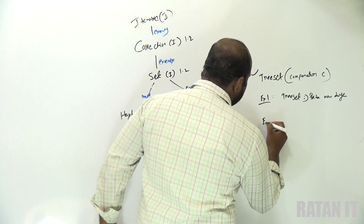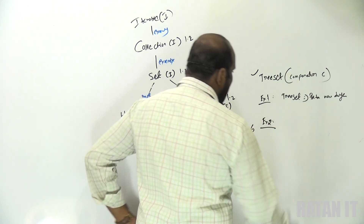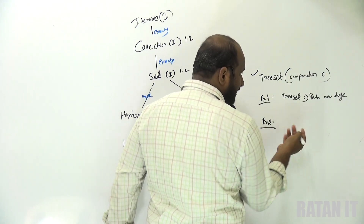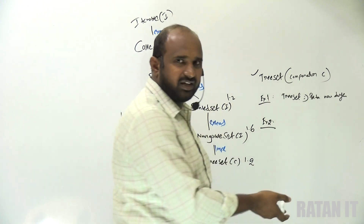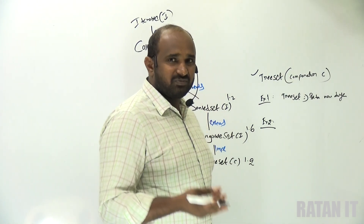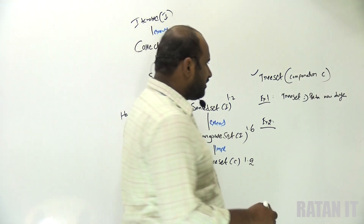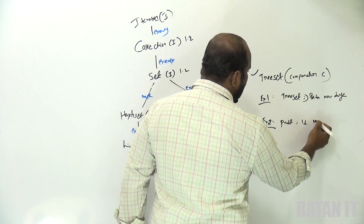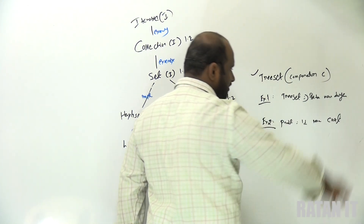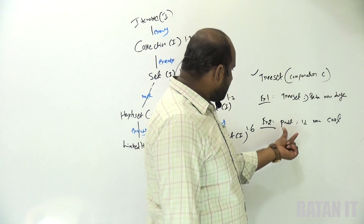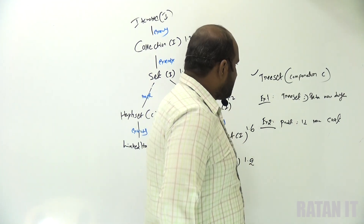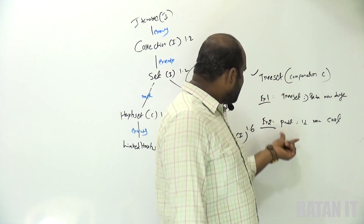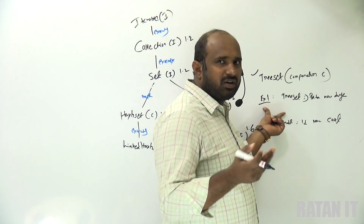In example two, I will take product data. The product object contains product ID, product name, and product cost. Can you please add the product objects into the TreeSet? But when adding product objects into the TreeSet, sorting is not performed directly. Why? Because default sorting is performed only for comparable classes — String class and wrapper classes only.